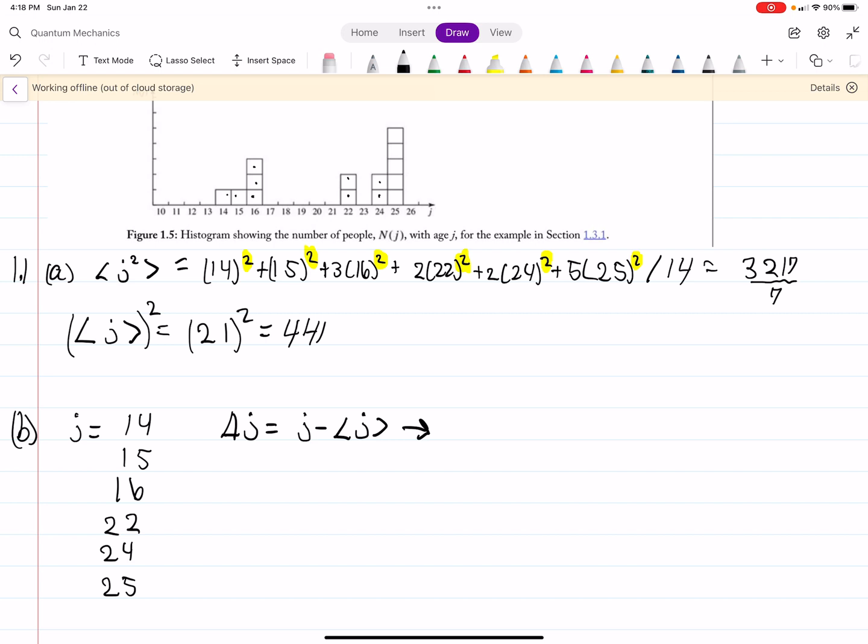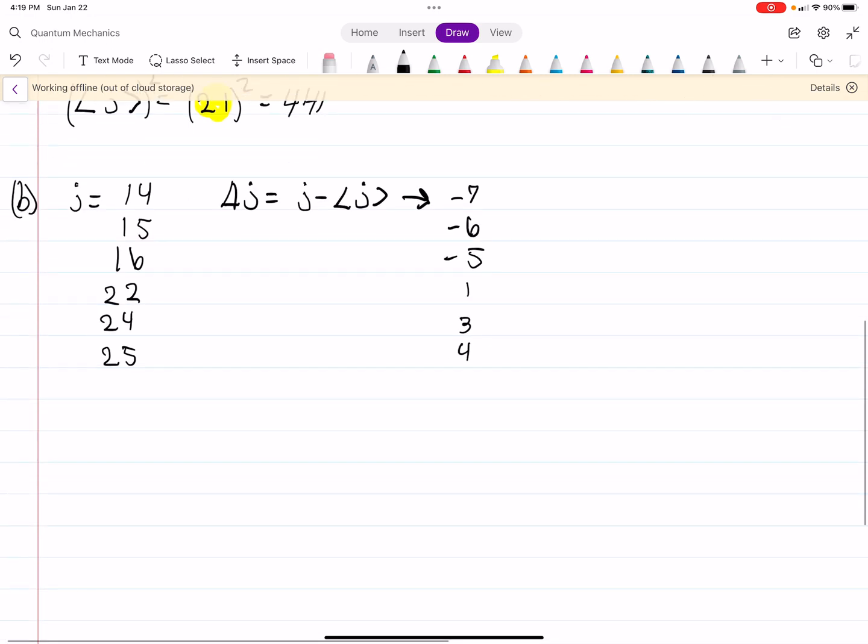So we're going to do that for each term. Delta J, we already calculated in part A. Well, the square of it we did. And J is right there. So, for example, for the first term, we get negative 7, negative 6, negative 5, 1, 3, 4. So that's pretty easy. You're just subtracting two numbers.